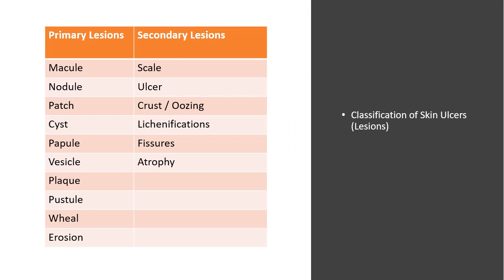Primary lesions include macules, which are flat and small (less than one centimeter), like freckles, flat moles, or rubella. A papule is raised and small (less than one centimeter), like a wart or elevated mole. Patches are flat and large — things like vitiligo or cafe-au-lait spots. So a macule is smaller than a centimeter and a patch is larger than a centimeter, but both are flat.